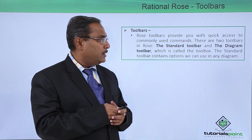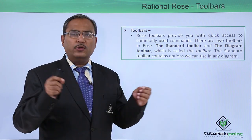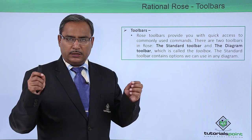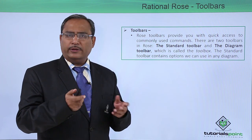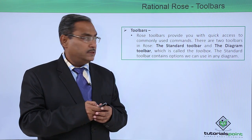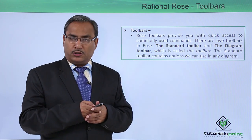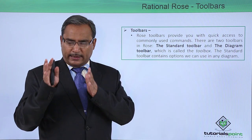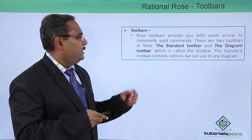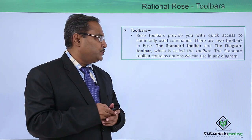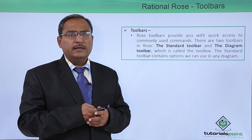One is your standard toolbar and the other one is the diagram toolbar. The standard toolbar will remain always there at the top of the window and you can select the respective options through icon clicking. The other one is the diagram toolbar, which is also called as a toolbox. Depending upon the diagram whatever you are selecting, the respective toolbox will get populated with the related icons. The standard toolbar contains options that we use in any diagram.